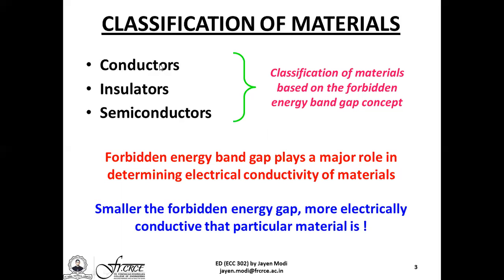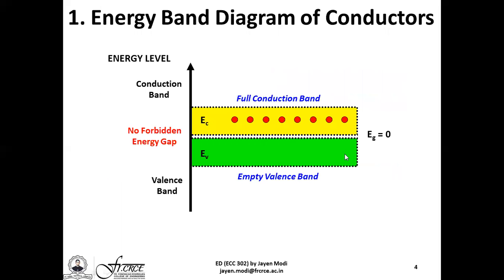Looking at the very first material — conductors — this particular sketch shows you the energy band diagrams of typical conductors. Starting from the vertical axis, you observe that the valence band and conduction band are both in very close proximity. The forbidden energy gap between the conduction band and the valence band is essentially zero; in other words, the conduction band and the valence band actually overlap. The red dots that you see are basically electrons, and for conductors, you have free electrons already present in the conduction band. These free electrons greatly contribute to the flow of electric current in the conductor material.